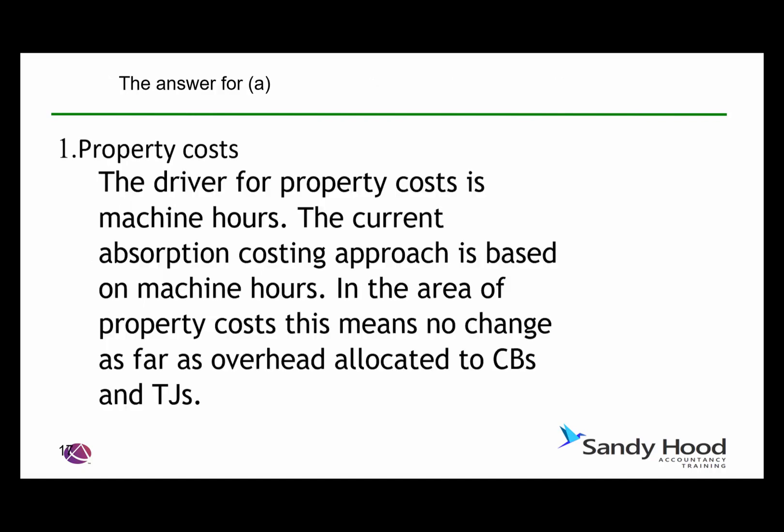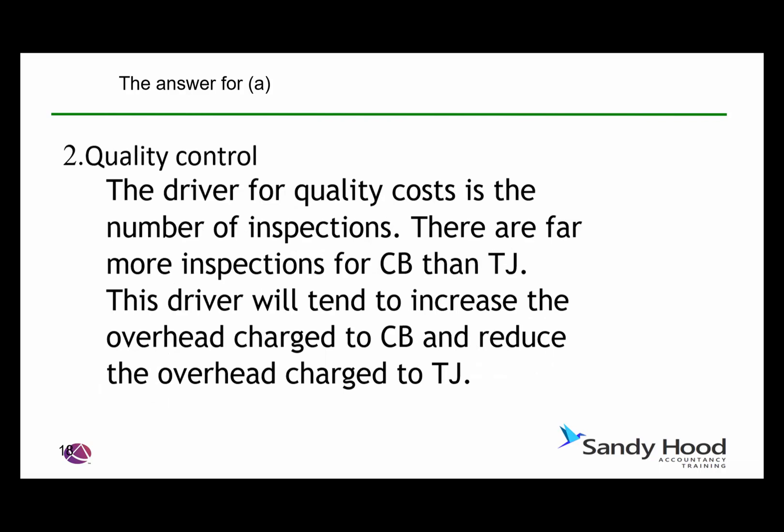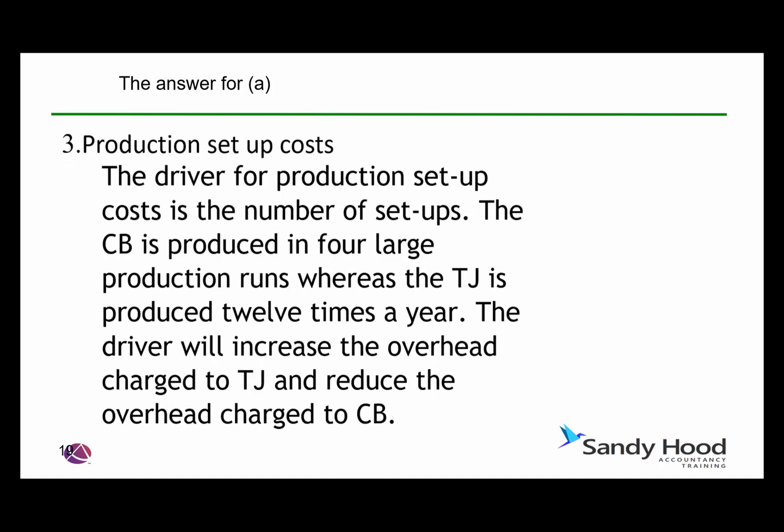Here are our paragraph answers under four headings. Property costs: the driver for property costs is machine hours, which is the same as the current absorption costing approach — so there's no change in overhead allocated to CB or TJ. Quality control: the driver is the number of inspections. There are far more inspections for CB than TJ, so this driver increases the overhead charge to CB and reduces it to TJ. Production setup costs: charged on the basis of number of setups. CB is produced in four large runs whereas TJ is produced 12 times a year, so this driver increases the overhead charge to TJ and reduces it for CB.